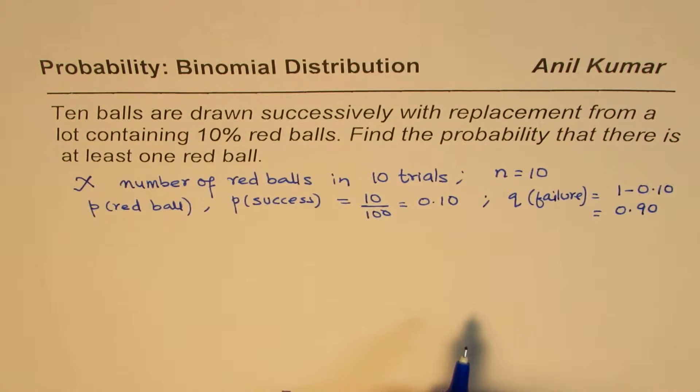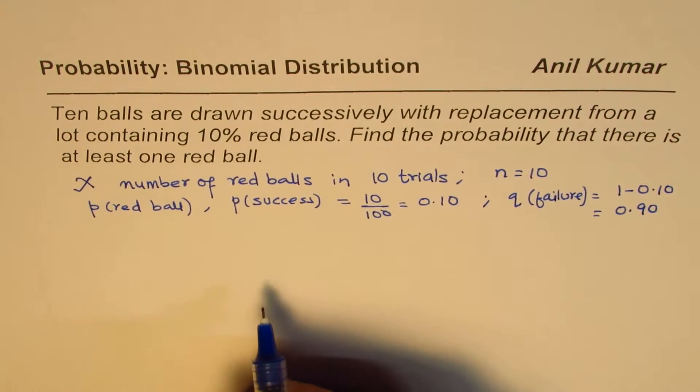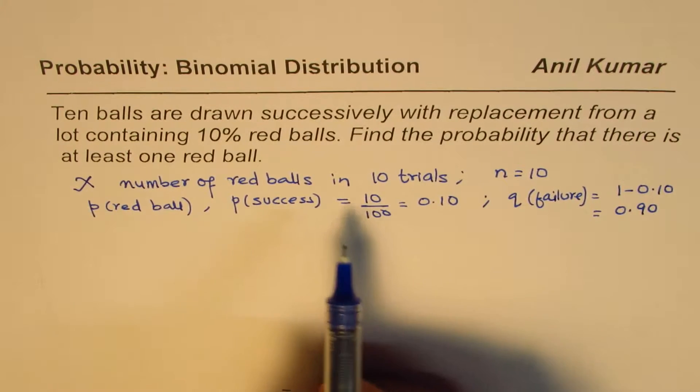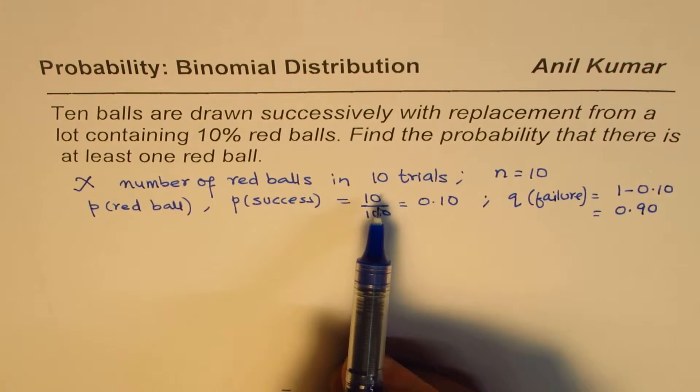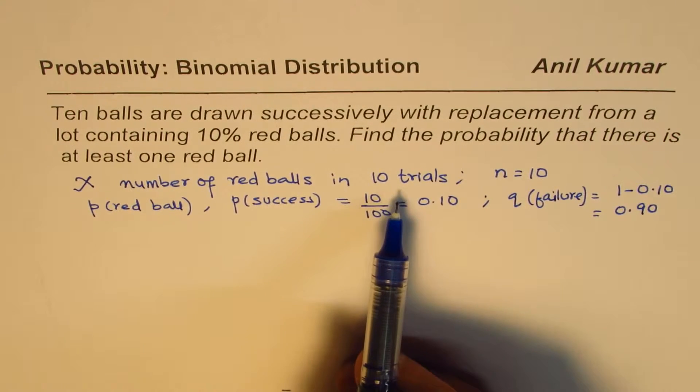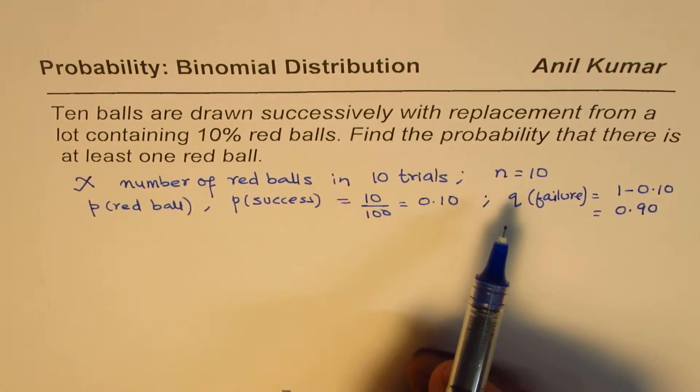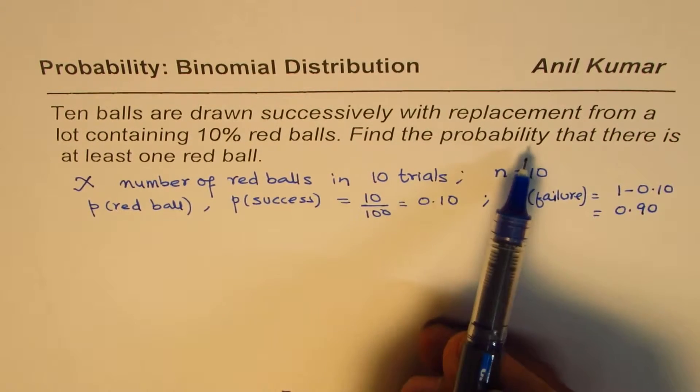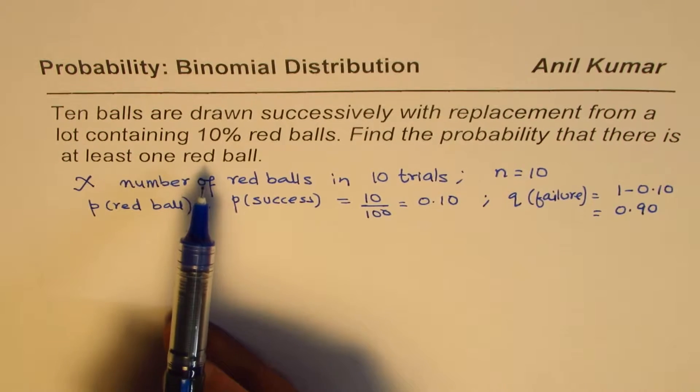So we know our parameters. This is definitely a binomial distribution, since we have 10, which is a limited number of trials, all are Bernoulli trials. Therefore, we can find the probability that there is at least one red ball.